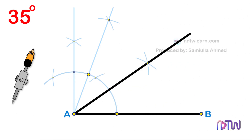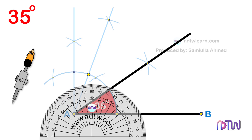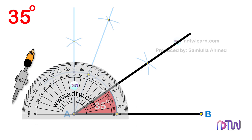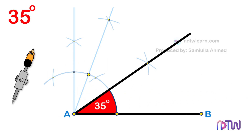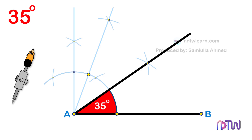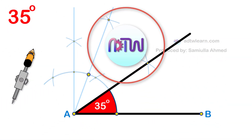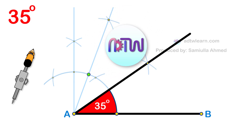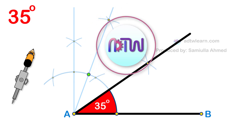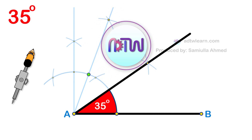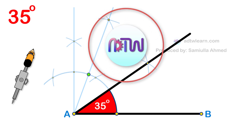This line will be inclined at the required 35 degree angle. You can cross-check using a protractor. I hope you have understood how to construct an angle of 35 degrees. If you liked this video, click on the like button. If you are new to my channel, click on the subscribe button and turn on all notifications to get my latest videos.